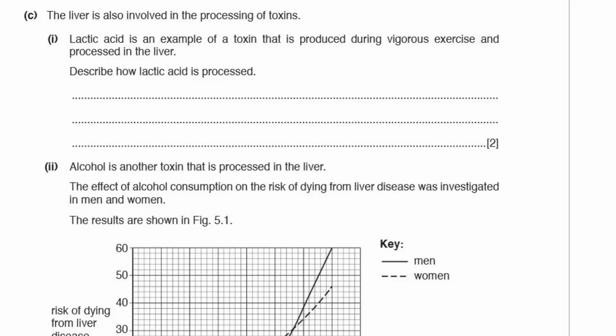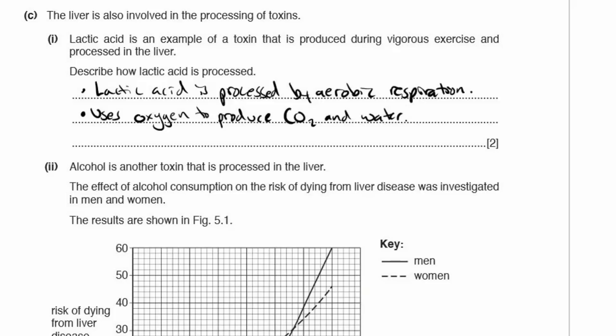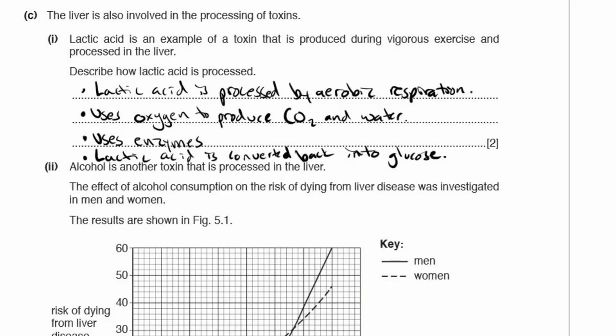The liver is also involved in processing toxins. Lactic acid is produced during vigorous exercise and is processed in the liver. Describe how lactic acid is processed: it is processed by aerobic respiration, which uses oxygen to produce carbon dioxide and water. This process uses enzymes, and lactic acid is converted back into glucose.